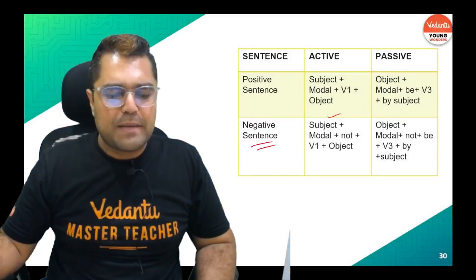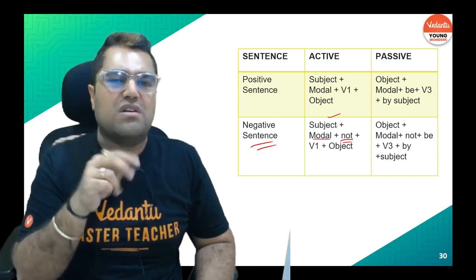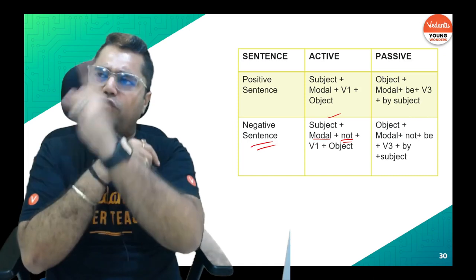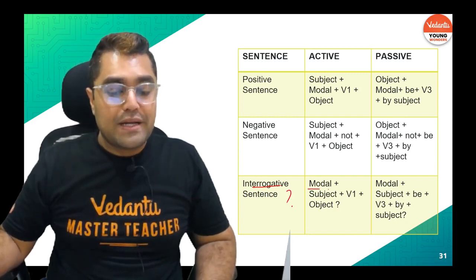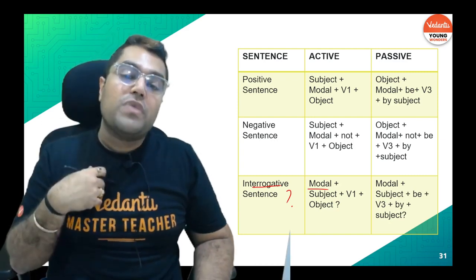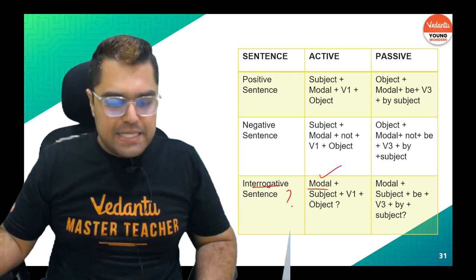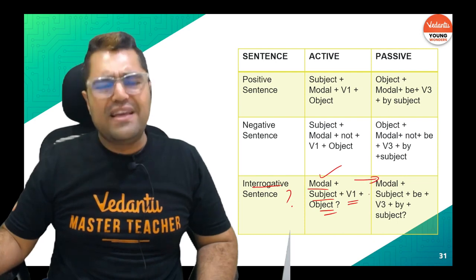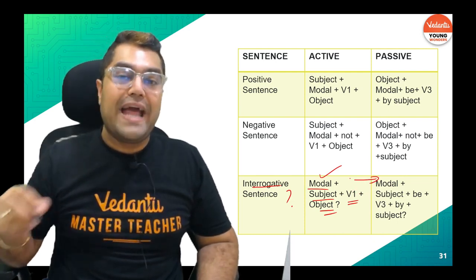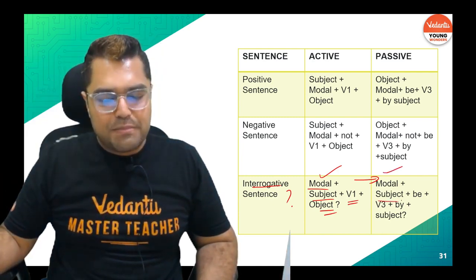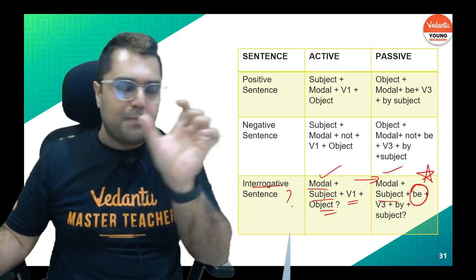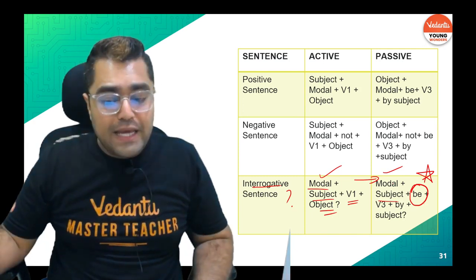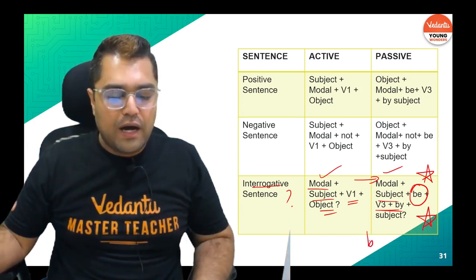For negative sentences: Subject + Modal + not + ... — same rule applies. The object moves to the front, the subject goes to the back, V3 is used, and 'by' is added. Modal + not stays as it is. For interrogative sentences: Modal comes first — Modal + Subject + V1 + Object. After conversion, the modal still comes first. Remember Amit Sir's magic formula: modal position does not change; subject and object interchange; add 'be + V3 + by.'